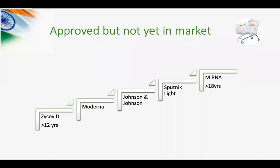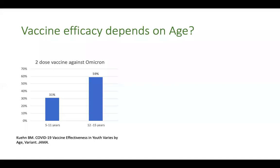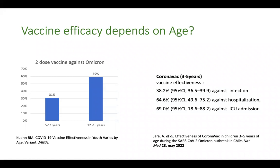Other vaccines like Zycov-D, Moderna, Johnson & Johnson, Sputnik, and a recently launched mRNA vaccine manufactured in India are approved by DCGI but have not yet reached the market. Recent reports indicate vaccine efficacy depends on age - children above 12 years respond better than children less than five years, though this study mainly used Pfizer at smaller doses for younger children. Coronavac, which uses a similar platform to Covaxin, shows 70 percent protection against ICU admissions and 65 percent protection against hospitalization in children as young as three to five years.